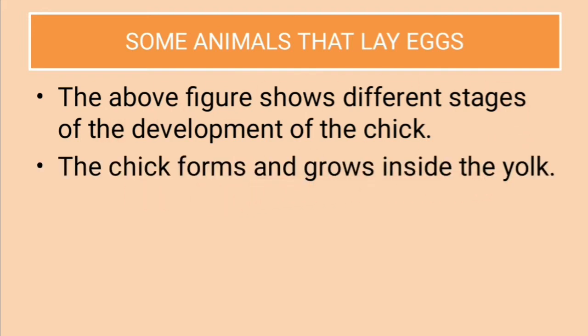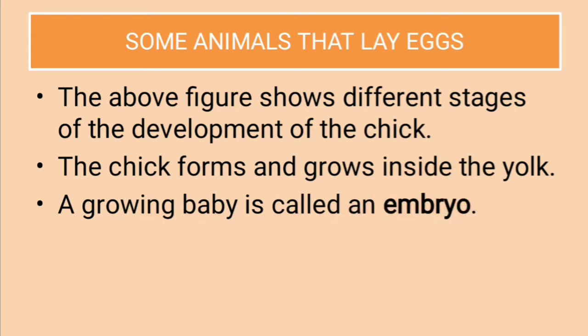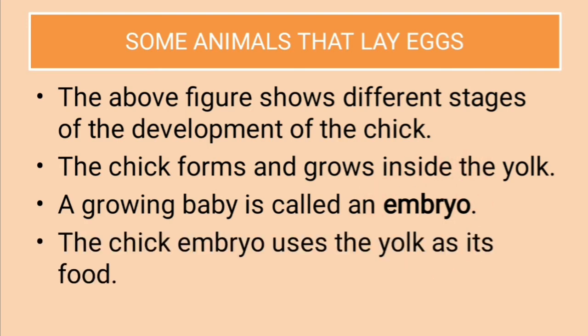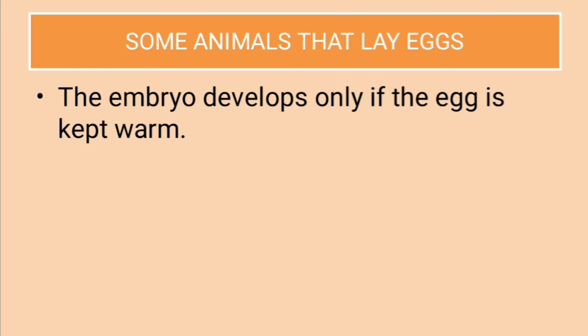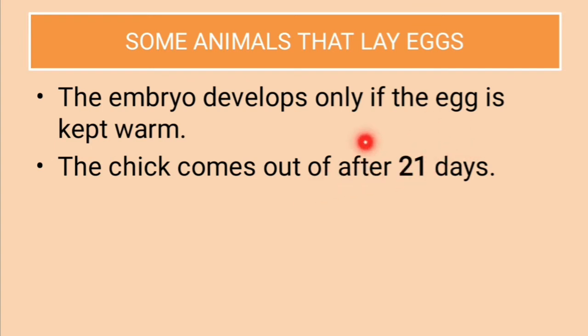The chick forms and grows inside the egg. The growing baby is called an embryo. The chick embryo uses the yolk as its food — that yellow colored thing is used as food by the chick embryo. The embryo develops only if the egg is kept warm, and the chick comes out after 21 days. It takes 21 days to come out, and during this time it must receive proper warmth, which is the prime responsibility of the bird.